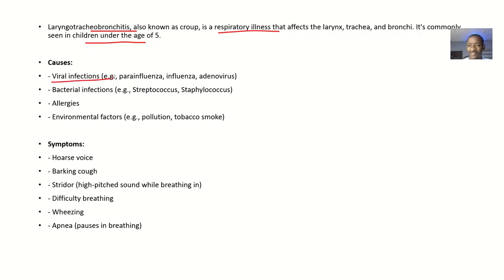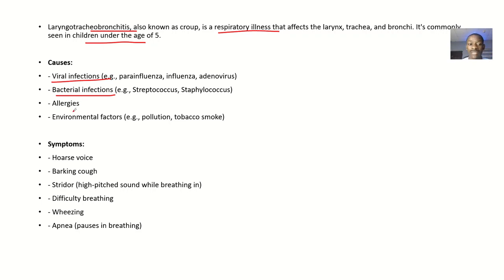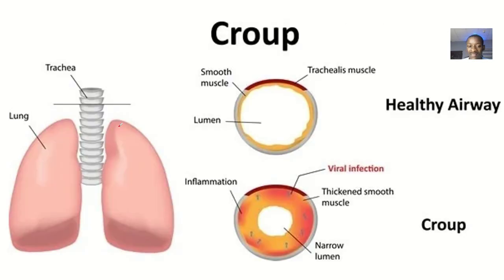What could make the larynx, trachea, and bronchus become inflamed? It could be due to viral infections like para-influenza, influenza, or adenovirus infections. It could also be bacterial infections like streptococcus or staphylococcus. It could be due to allergies or environmental factors like pollution or tobacco smoke.